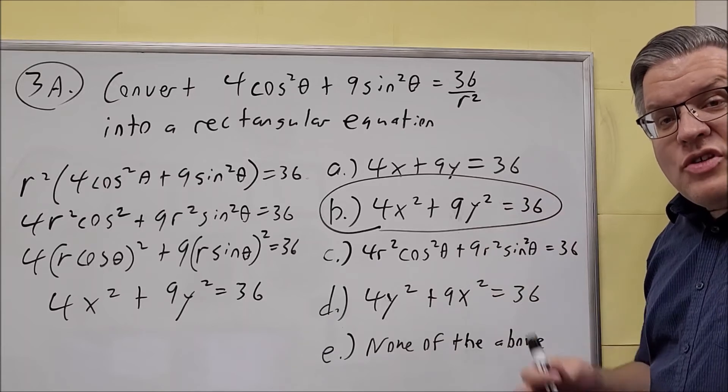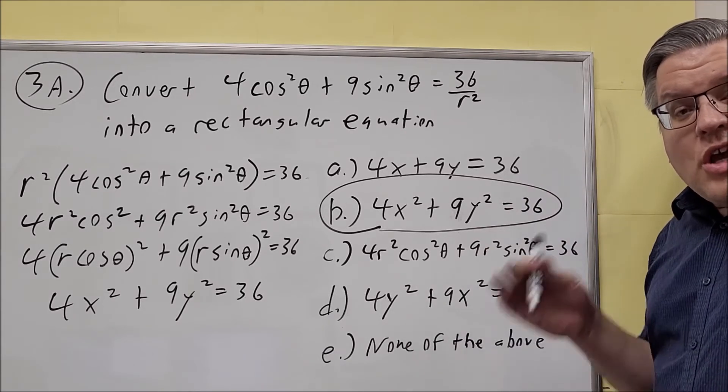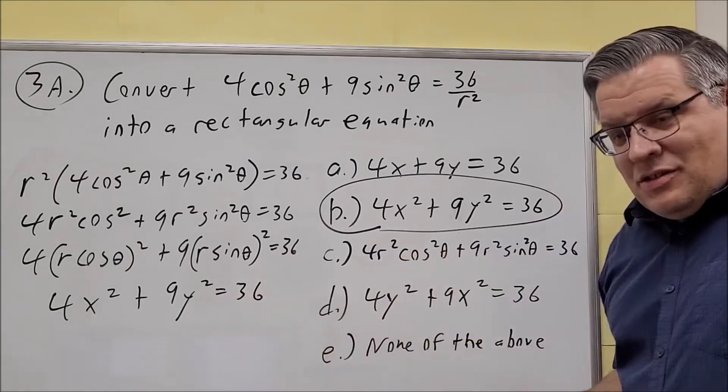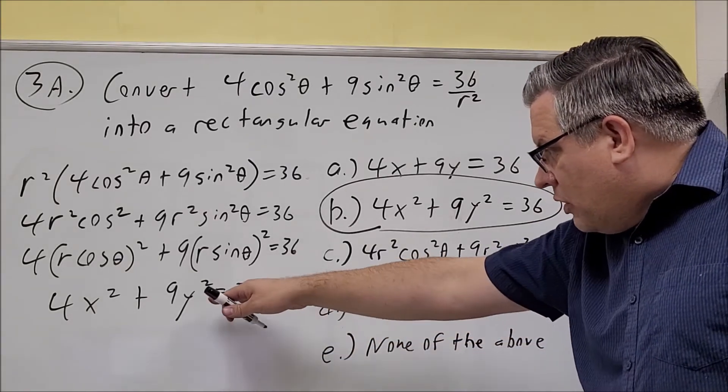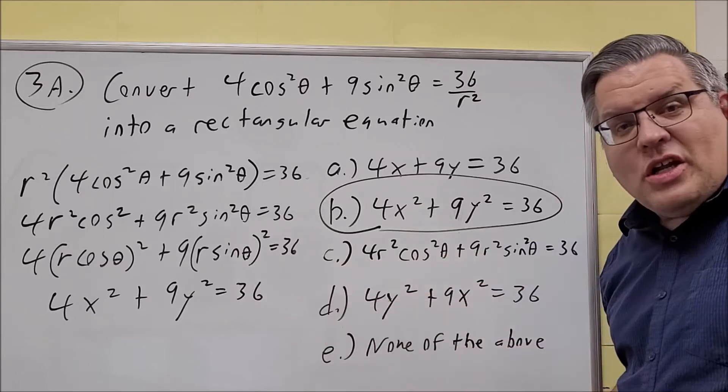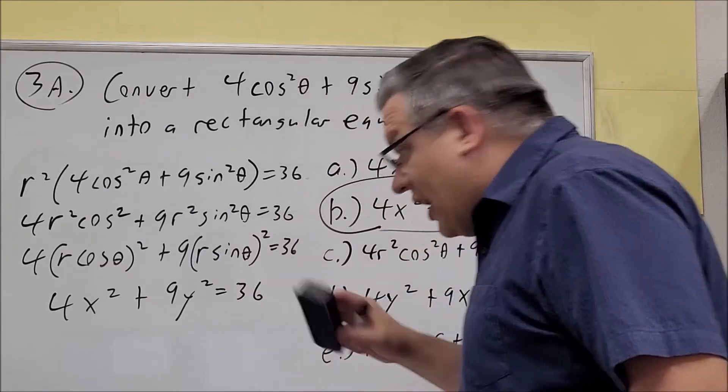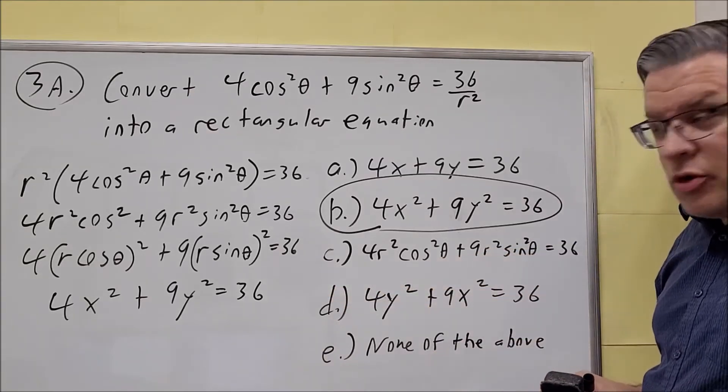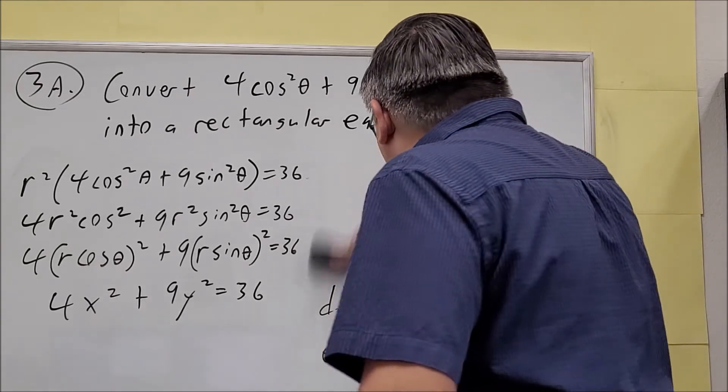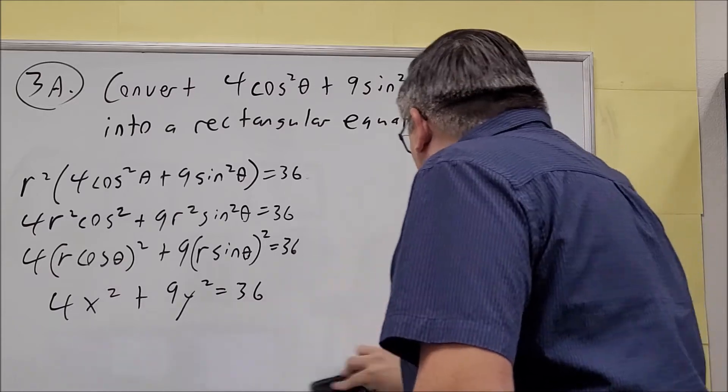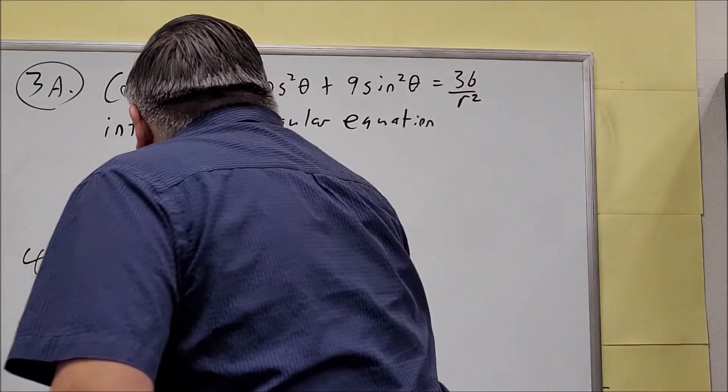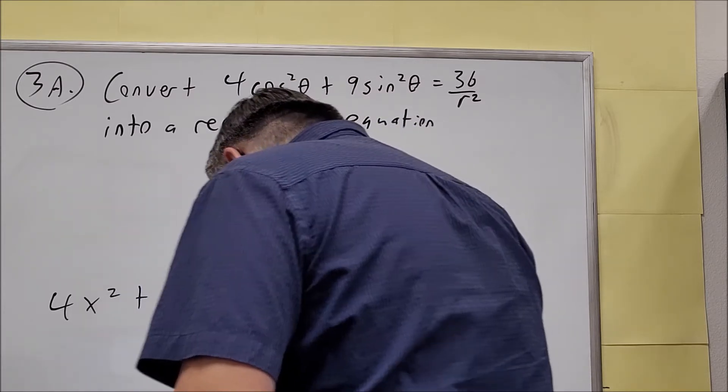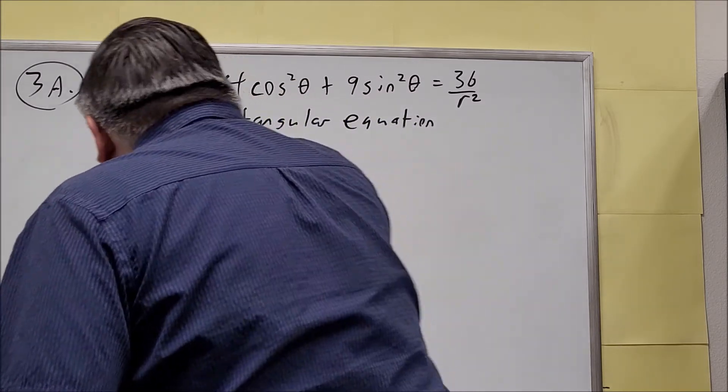Now this question is also going to have a second part to it. The second part is going to ask you to identify what kind of equation is this represented. If we wanted to graph it what would we get? So let me write out that as well. So we do know our answer here, 4x squared plus 9y squared equals 36. All right, now here's something else they're going to ask you. They're going to ask you, what kind of graph is this?